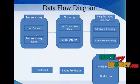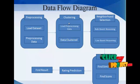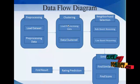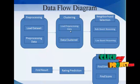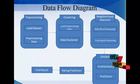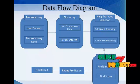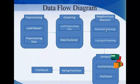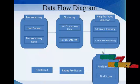The pre-processed data is then clustered. Clustering is used to divide the dataset into specific groups. Next, we select the neighborhood, which is done by two techniques: the first is rule-based and the second is case-based. These two techniques are used to find the neighbors.